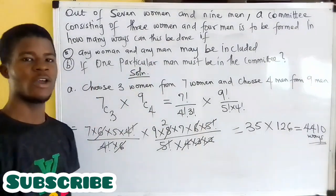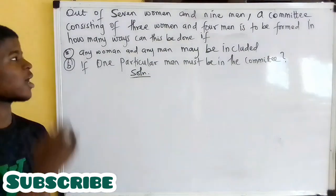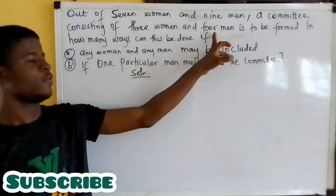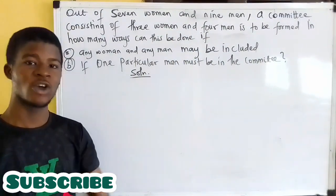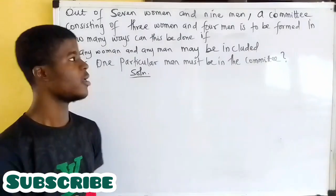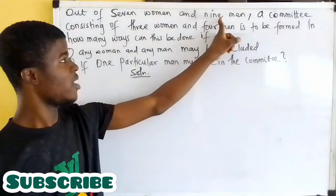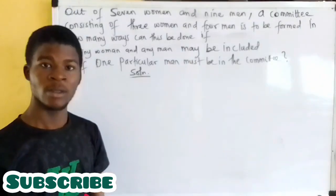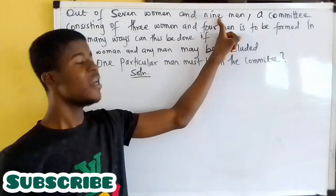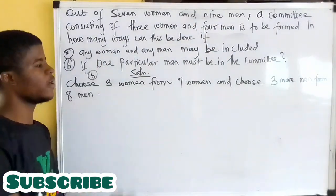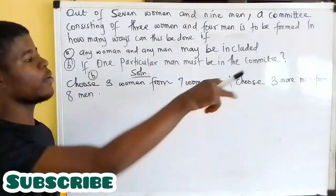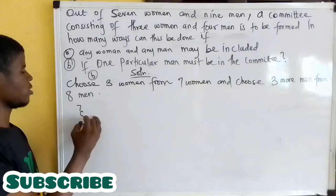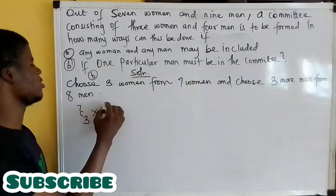Now, if one particular man must be in the committee — we need four men total, but one particular man must be there. So we only need to choose three more men. And since one man is already fixed, the remaining pool reduces from nine to eight men. We will choose three women from seven women and choose three more men from eight men. Choosing three women from seven is seven combination three, and choosing three men from eight men is eight combination three.